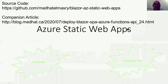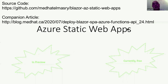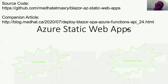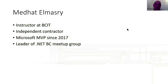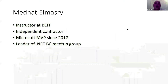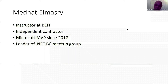The product is called Azure Static Web Apps, and it was announced at Build in May. This product is currently in preview and also currently free of charge, so you can all go and try it out. I'm an instructor at BCIT, an independent contractor, and I've had the honor of being an MVP since 2017. I'm also the leader of this meetup group.